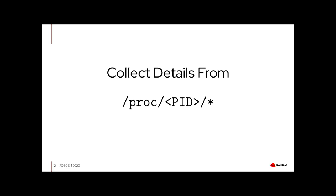CRIU stops the processes, collects all the information, and writes it to disk. The tool is named Checkpoint/Restore In Userspace for a reason: before it was developed, there were multiple other checkpoint/restore implementations for Linux that were not in user space — they were either completely in kernel space or relied on custom syscall interfaces. CRIU works a different way.